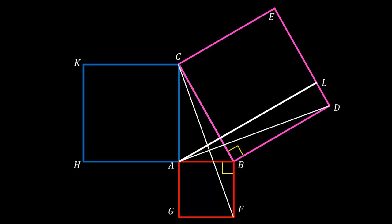Notice that CBD and ABF are both right angles, so if we add angle ABC to each of them, they would still be equal. We thus know that angle DBA is equal to the angle CBF. Because the pink and red squares are, well, squares, we know that BD is equal to BC and that AB is equal to BF. If two triangles have the same two sides at the same angle, they must be equal triangles, so we know that triangle ABD is equal to triangle BCF.